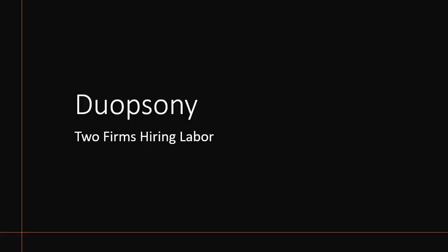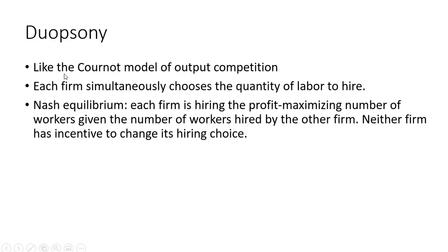In this video, we're going to look at duopsony competition. Duopsony is similar to the Cournot model. In duopsony, each firm simultaneously chooses a quantity of labor to hire, whereas in Cournot, they're choosing output. We're going to have a Nash equilibrium here, where each firm is hiring the profit-maximizing number of workers given the number of workers hired by the other firm. Neither firm has an incentive to change its hiring choice.